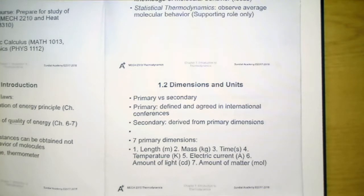There are two kinds of dimensions. Primary dimensions are those who are defined and agreed in international conferences, while secondary dimensions are expressed in terms of the primary ones. We will use SI units in this handout as well as this course. For the English units, it is only of a supporting role and we will not emphasize it in this course.